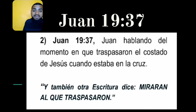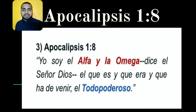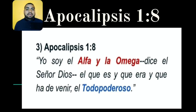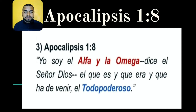Vamos a ver una cita más que el apóstol Juan escribe en el libro de Apocalipsis, capítulo 1, versículo 8. Esa es la tercera cita sobre qué es el Alef-Tab. Fíjense lo que dice detenidamente Apocalipsis 1.8: 'Yo soy el Alfa y la Omega', dice el Señor Dios, 'el que es y que era y que ha de venir, el Todopoderoso.'